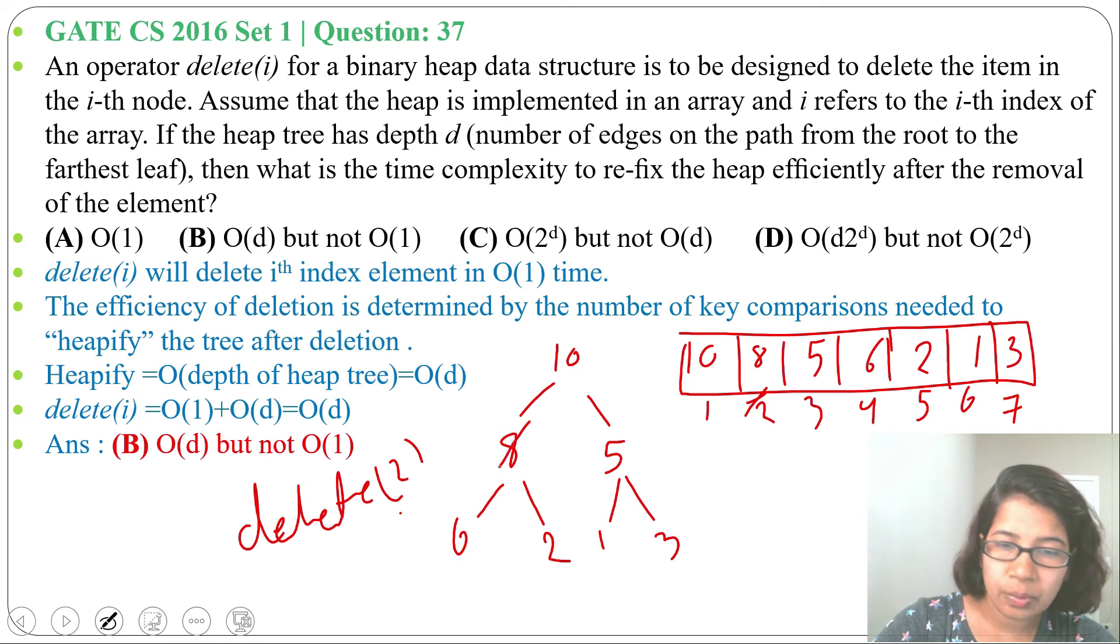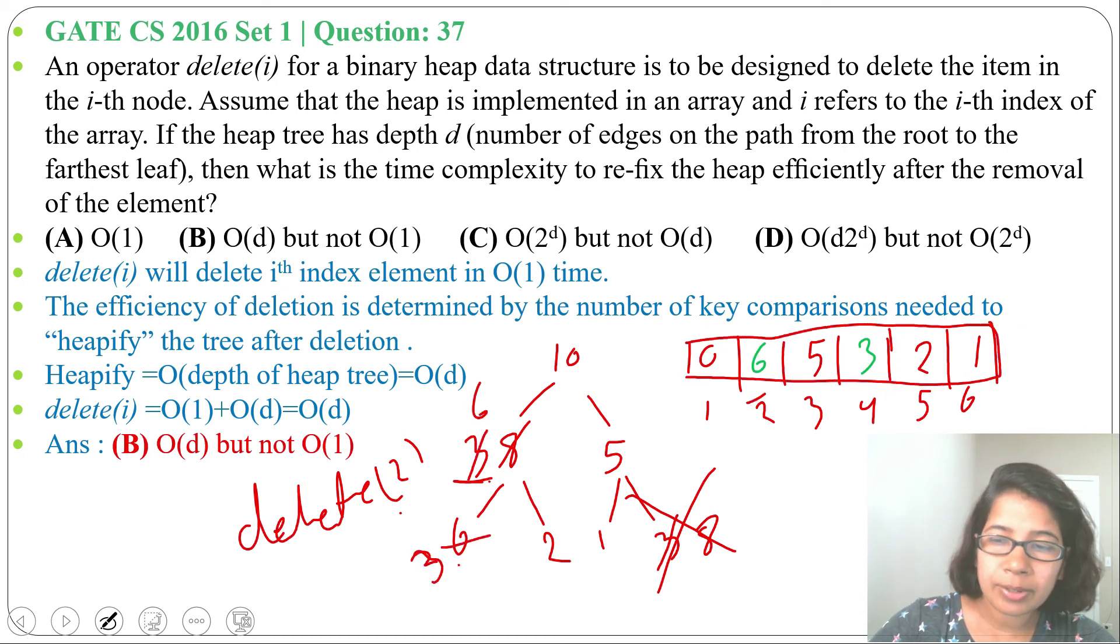We will swap this 8 with the last element: 8 will come here, 3 will come here. Next we will decrease the heap size, meaning we will delete this part. After that we need to heapify this, so its children are 6 and 2. 6 is the largest, so 6 will come here and 3 will come here.